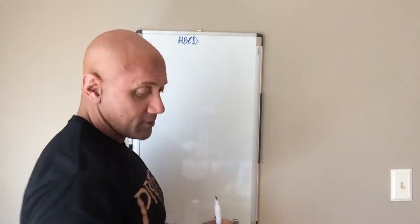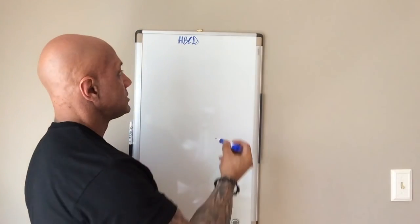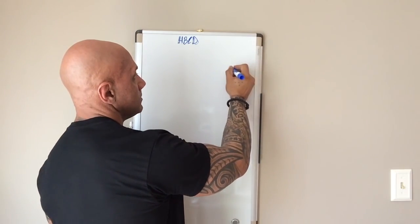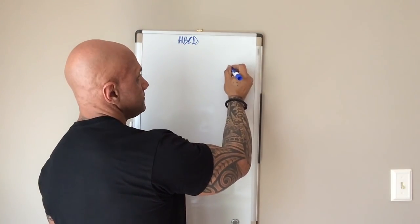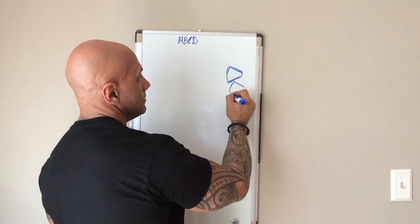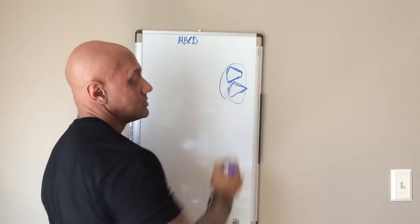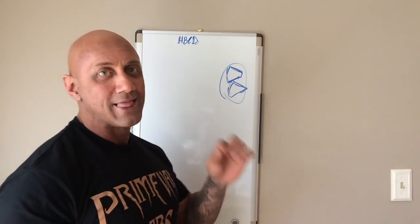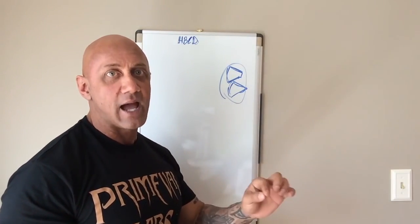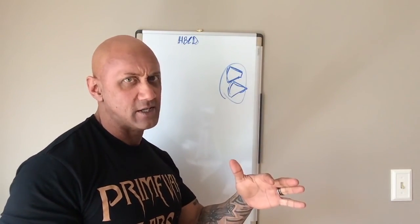Now you have the highly branched cyclic dextrins, which essentially are the cone-shaped molecules, correct? Now what we want these things to do, these cone shapes, is to actually work like insulin but not be insulin, if that makes any sense.